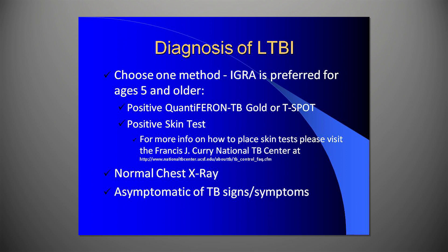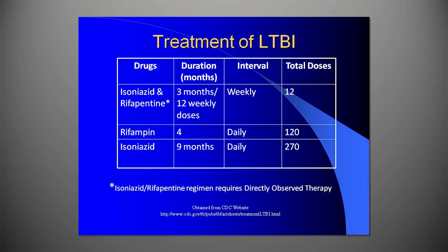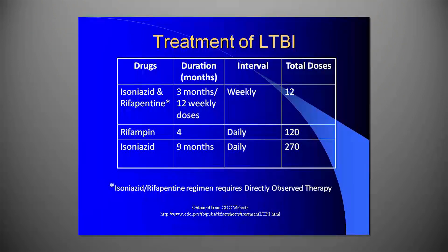LTBI is diagnosed through a positive skin test or IGRA test and a normal chest x-ray. A person must also be free from active TB symptoms. There are three treatment choices for latent TB infection. One choice is the once weekly dose of isoniazid and rifapentine for a total of 12 weeks, done by directly observed therapy coordinated through Public Health Madison and Dane County. Another is a once daily dose of rifampin for a total of four months. Or a once daily dose of isoniazid for a total of nine months.